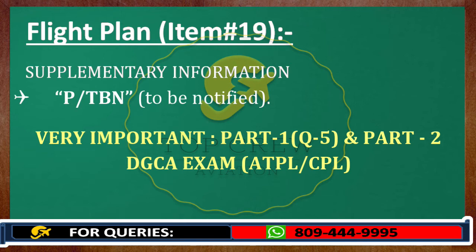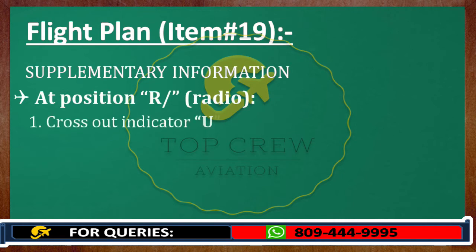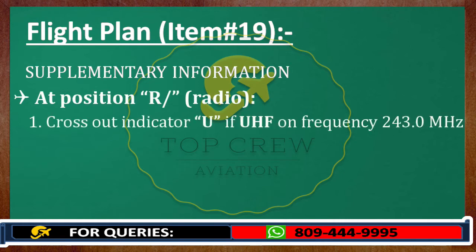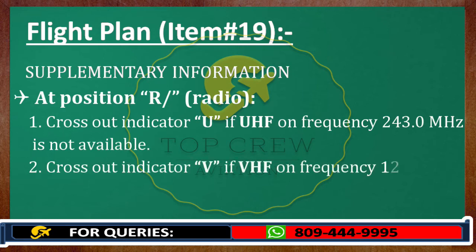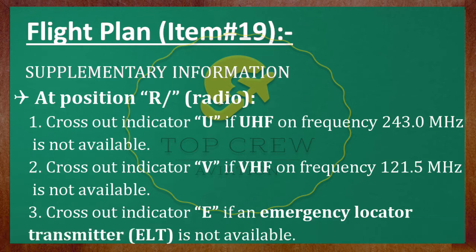Now let's talk about emergency radio. UHF, VHF, and ELT — we will discuss ELT, the Emergency Locator Transmitter, when we start studying Part 2. But here we should know that if we do not have any of them, we cross it out. For example, if we don't have VHF radio we cross VHF, and whatever we don't have we cross out.